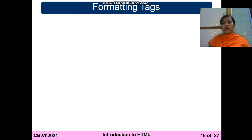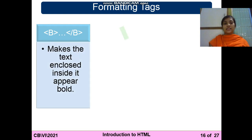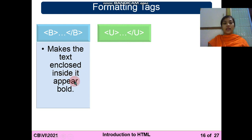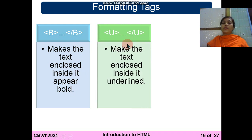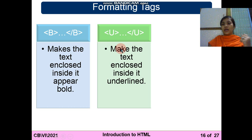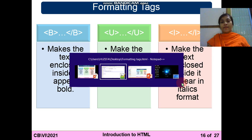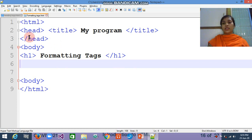We are going to learn about formatting text. There are three tags. The first one is the b tag — that is the bold tag — it makes the text enclosed inside it appear bold. The u tag makes the text enclosed inside it underlined; for example, capital U with some text between the opening and closing tags will appear as underline text in your web page output. The third one is the i tag, which makes the text enclosed inside it appear in italics format.